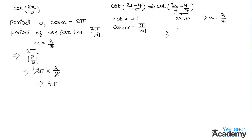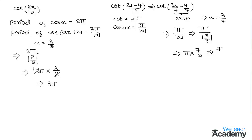Substituting the value of a in π divided by |a|, we get π divided by |3/7|. This simplifies to π multiplied by 7/3, giving us the result 7π/3, which is the period for the given function cot((3x − 4)/7).